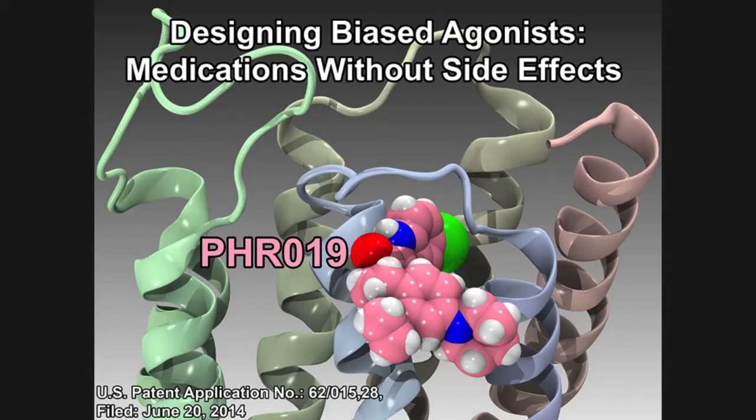However, a biased agonist is a drug that only has one cellular effect, or in other words, only turns on one light switch. On this slide, you can see our computer model of the CB1 receptor. It consists of these ribbon and loop structures. But most importantly, you can see a compound that I've designed called PHR019, shown here in paint. And this is the first completely biased agonist of a receptor.